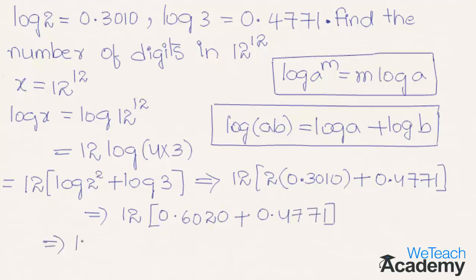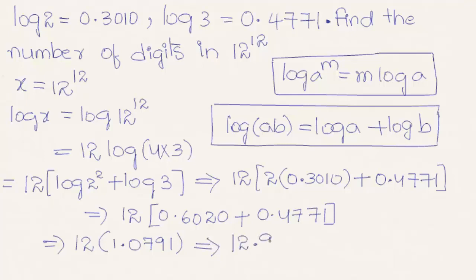That gives us 12 into 2 times log 2 equals 0.6020, plus 0.4771, which equals 1.0791. So we get 12 into 1.0791, and the final result is 12.9492, which is approximately equal to 13. So the number of digits in 12 raised to the power 12 is 13.